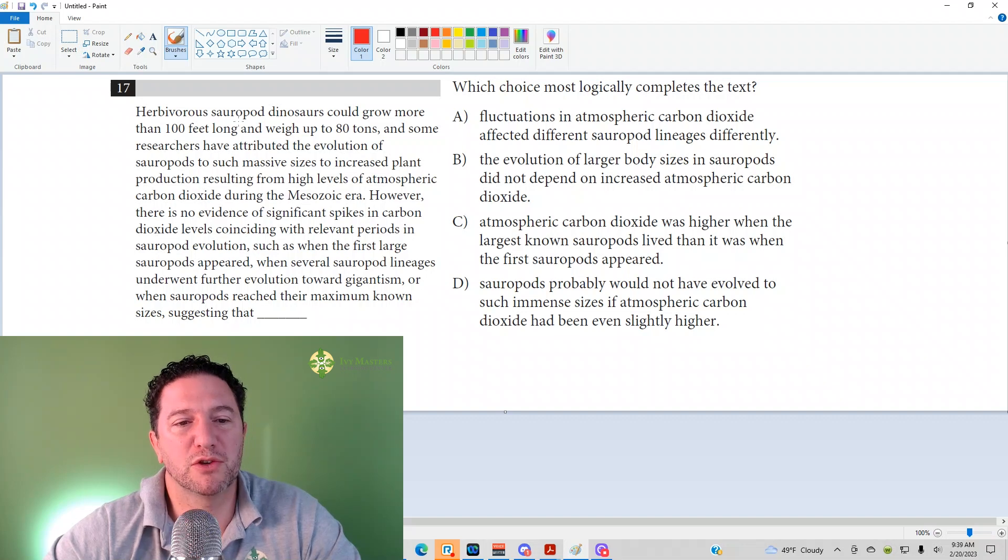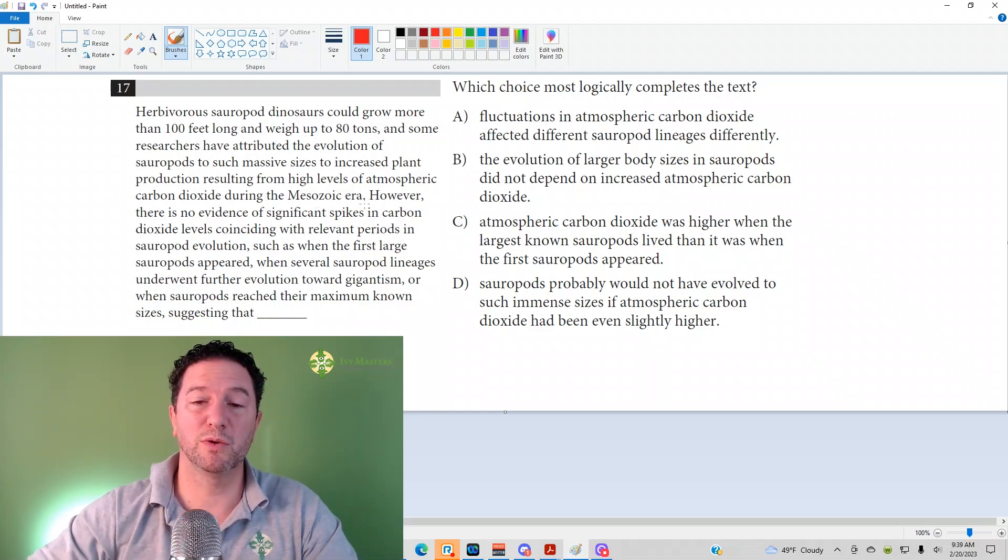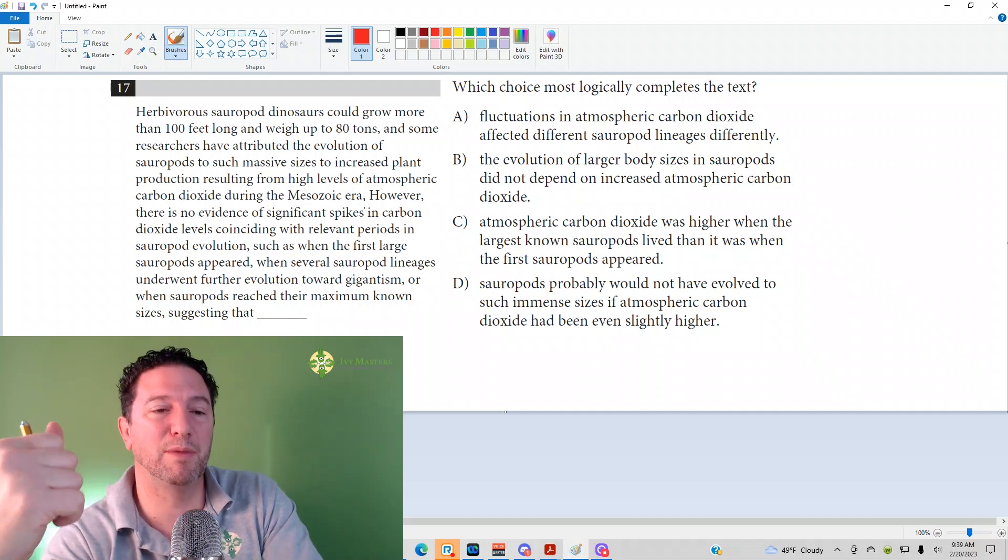Number 17 reads: herbivorous sauropod dinosaurs could grow more than 100 feet long and weigh up to 80 tons. Some researchers have attributed the evolution of sauropods to such massive sizes to increased plant production resulting from high levels of atmospheric carbon dioxide during the Mesozoic era. Just one sentence, but there's a lot to unpack there.